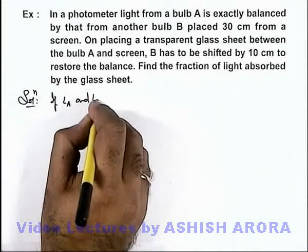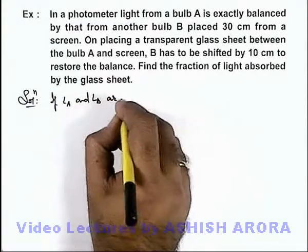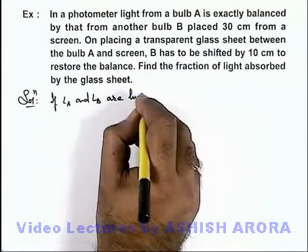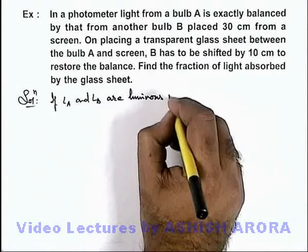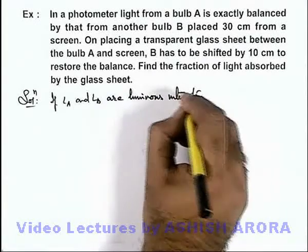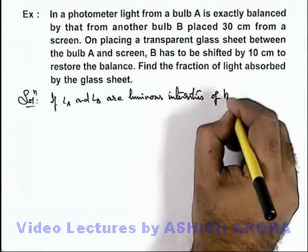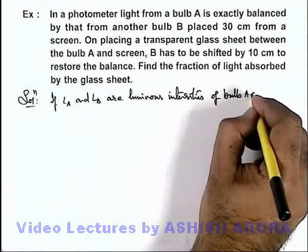In this situation we can write: if LA and LB are luminous intensities of bulb A and B,